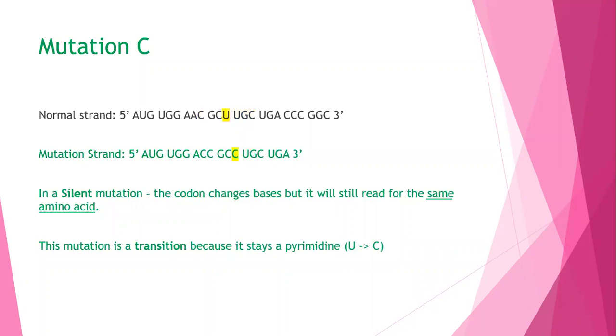In mutation C, the codon sequence GCU became GCC. This is a silent mutation because the changed base still codes for the same amino sequence. In this case, GCU and GCC both code for the sequence ALA.